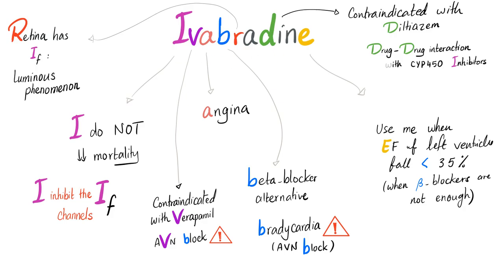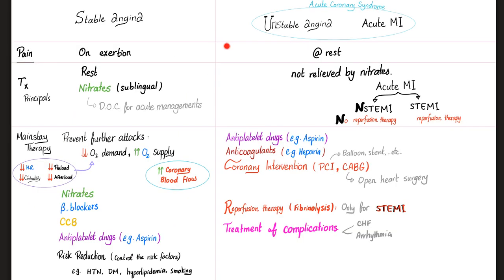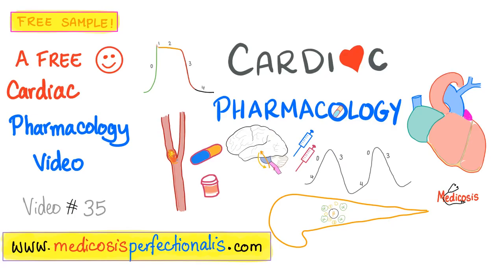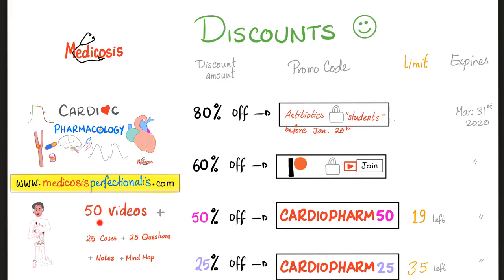This is everything you needed about ivabradine in just one beautiful slide. In my cardiac pharmacology course, I've discussed the difference between stable angina and acute coronary syndrome. You can download a sample for free at medicosisperfectionalist.com. This is video 35 for free — there are 50 videos total. Use the promo code CARDIOFARM50 to get a 50% discount. Only 19 spots left.